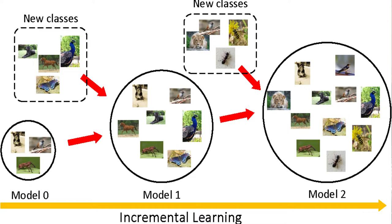Again we showed new classes — you can see sparrow, honeybee, ant, and lion. We showed these new classes again to our model, and now you can see model two is able to learn and have knowledge about different kinds of objects or classes: tiger, sparrow, peacock, honeybee, ant, horse, butterfly, and different insects. So in model zero we had limited knowledge, model one had more learning, and model two has more knowledge than model one. This way our machine learning models keep learning from new datasets and increasing their knowledge — this process we call incremental learning.